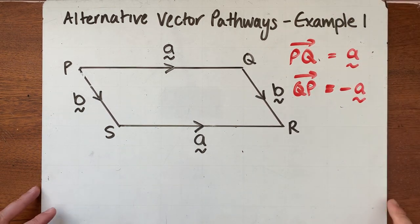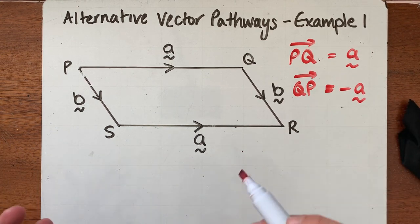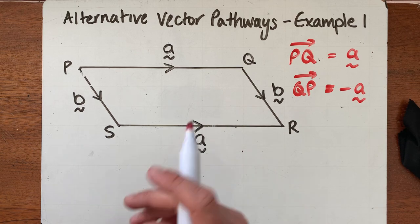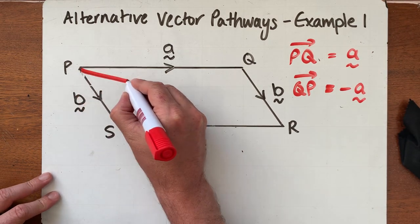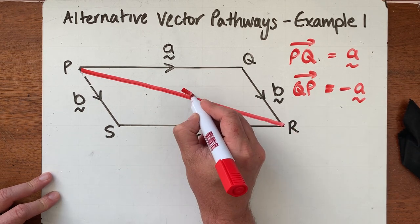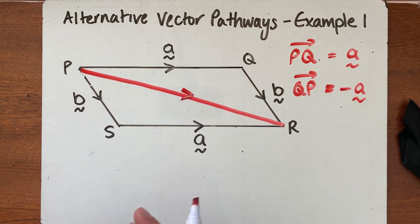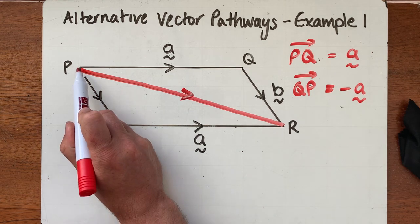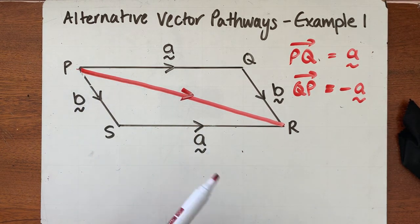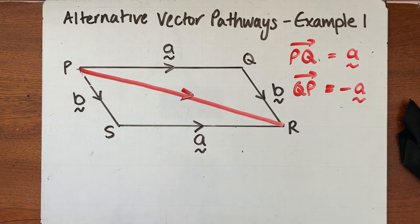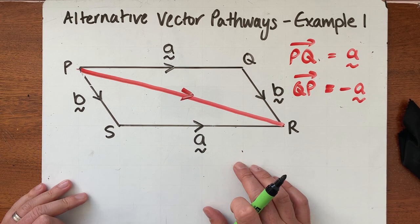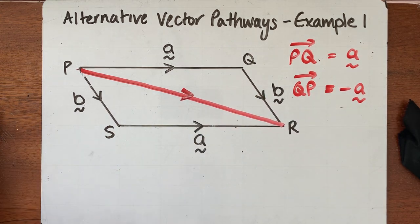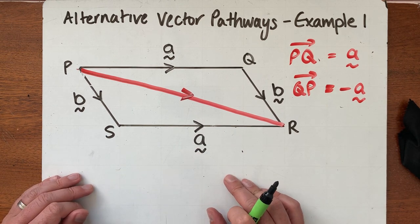Let's start doing some alternative vector pathway work. I want to describe the journey that goes from P to R using an alternative route. Think of this like a map — these are all roads, and I want to go from town P to town R, but the direct road is blocked. We need to find an alternative route, and we have quite a few different routes we could take on our parallelogram.